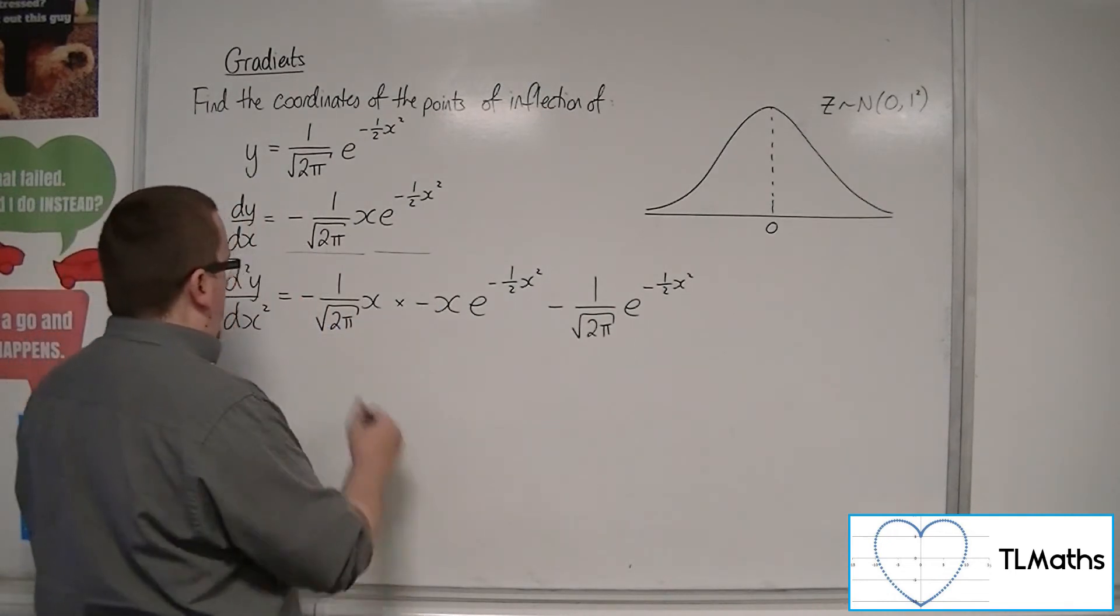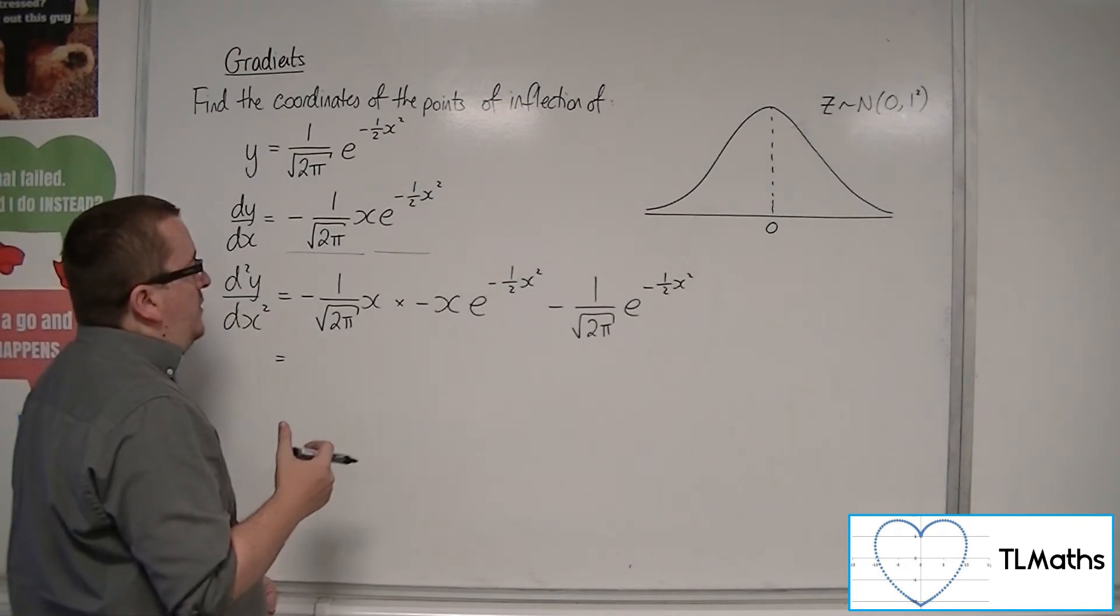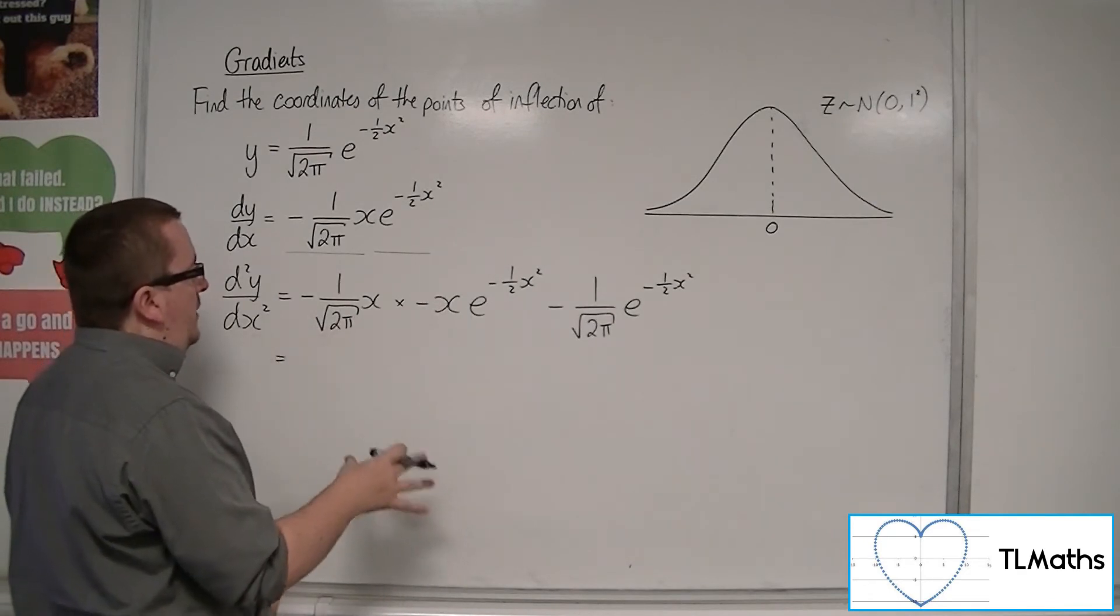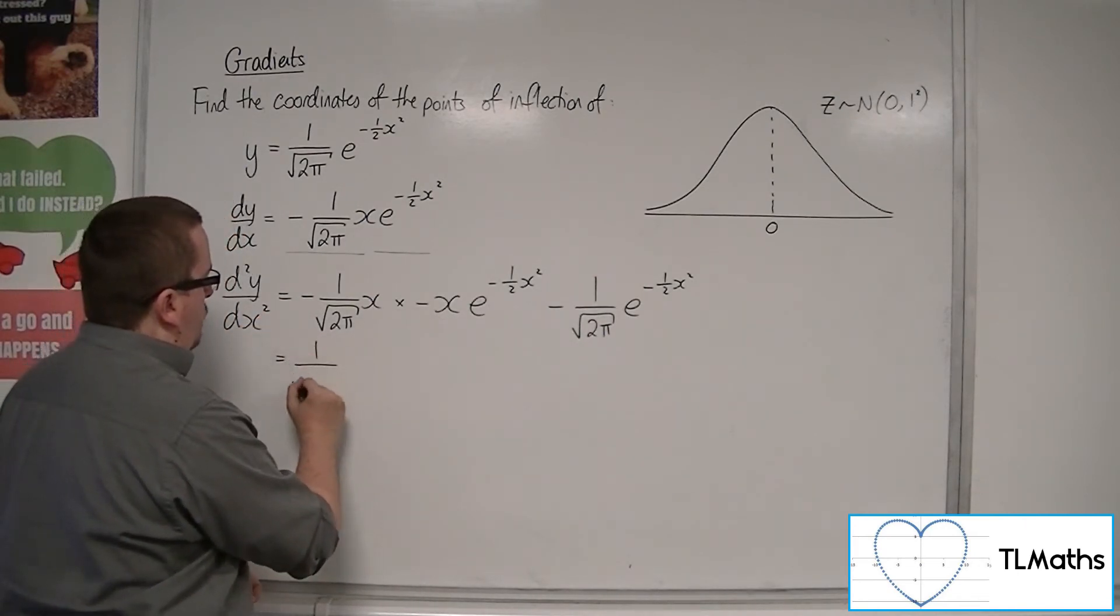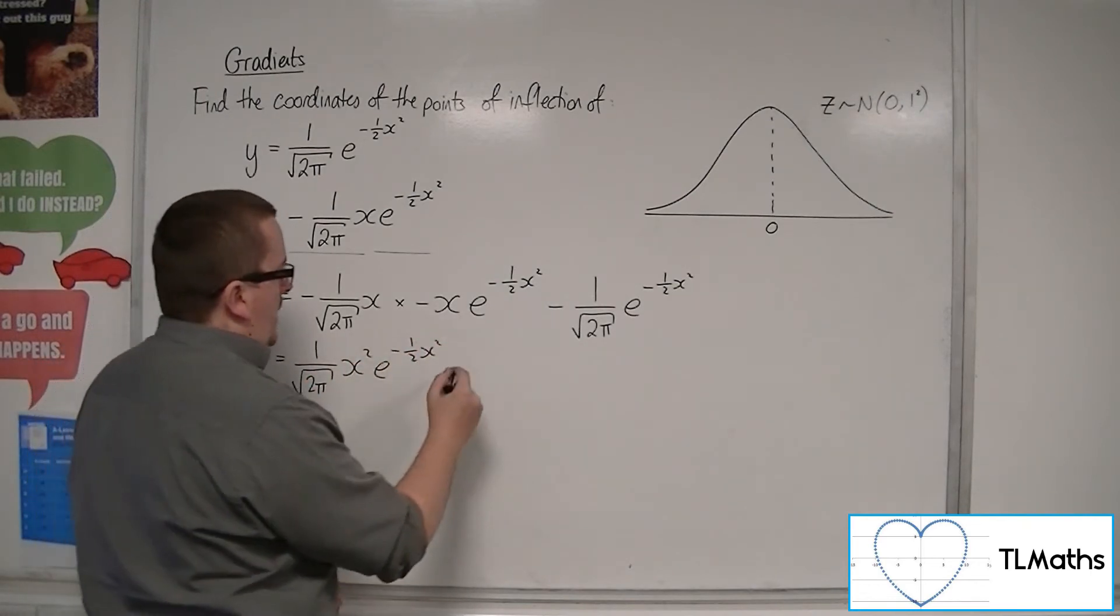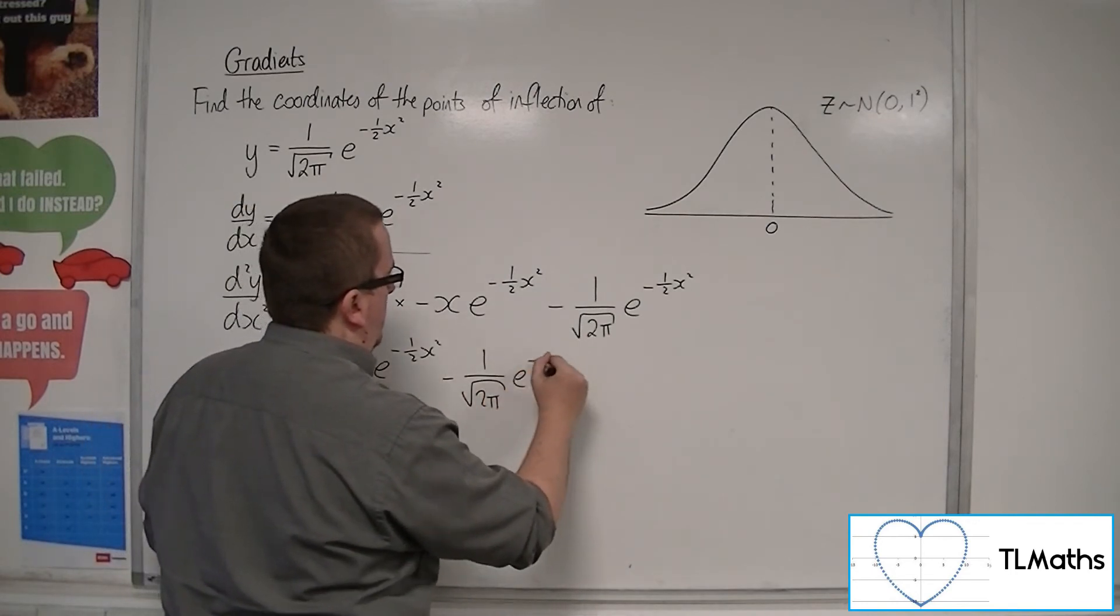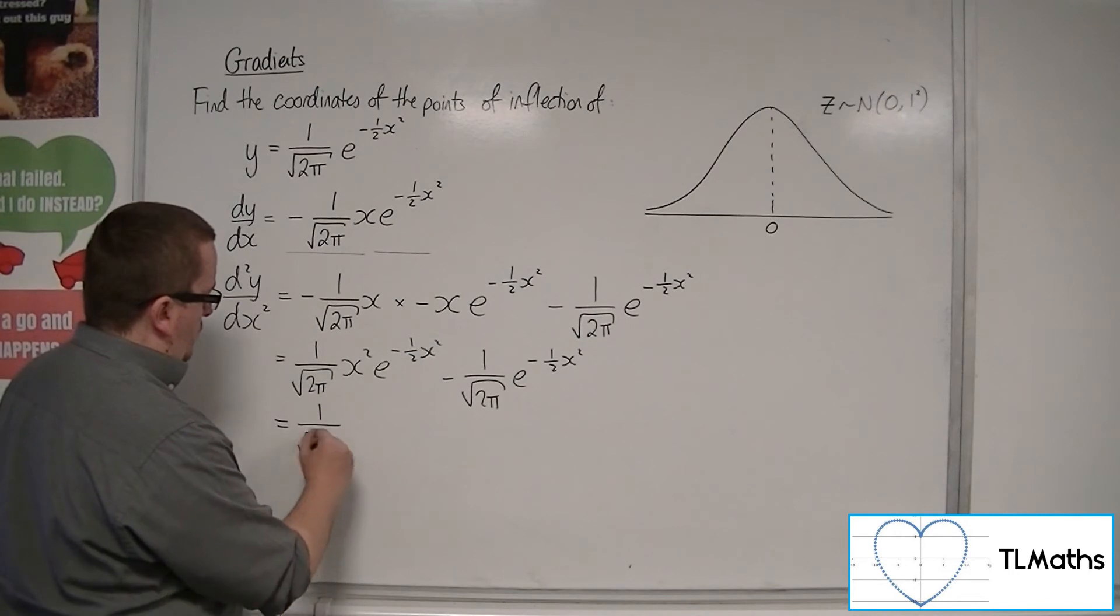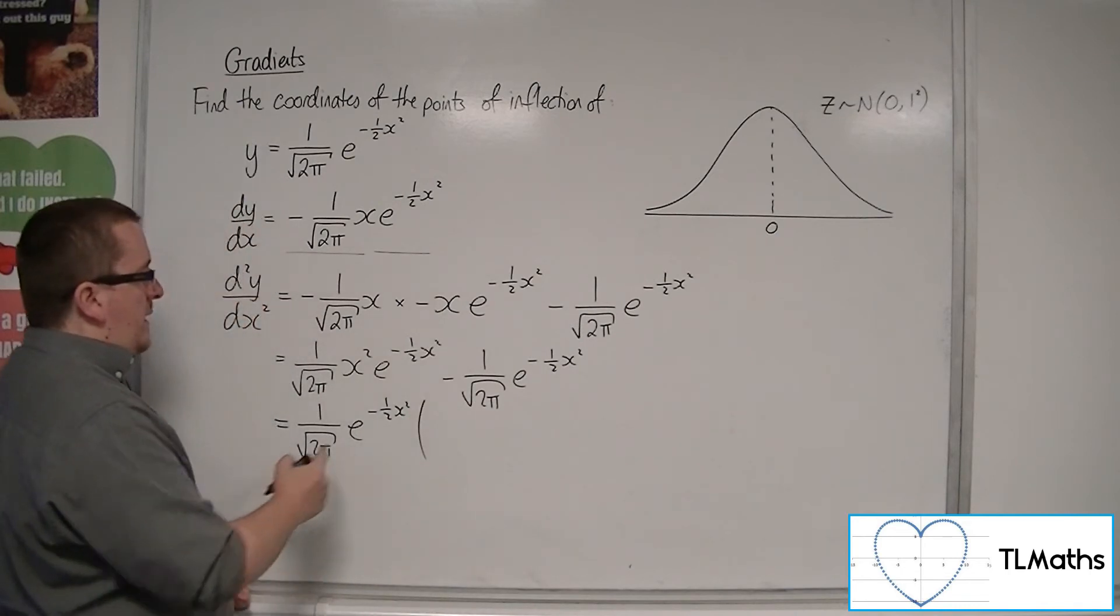So e^(-1/2 x²). So let's tidy this up. What I'm going to do is I'm going to think about factorizing this. Well, let's tidy it up first. That's probably a better idea. So we've got the two minuses make a positive. We've got x² there. So we've got 1 over root 2π x² e^(-1/2 x²) take away 1 over root 2π e^(-1/2 x²). So if I factor out the 1 over root 2π e^(-1/2 x²) of a bracket, and then I'm going to have x² - 1.